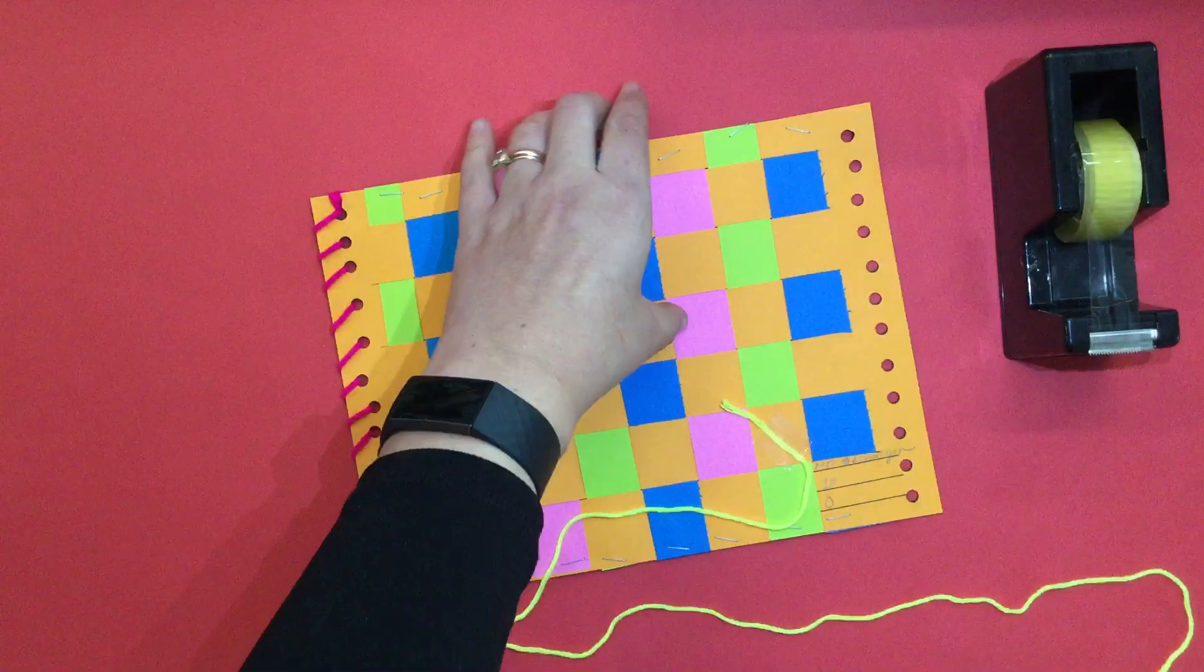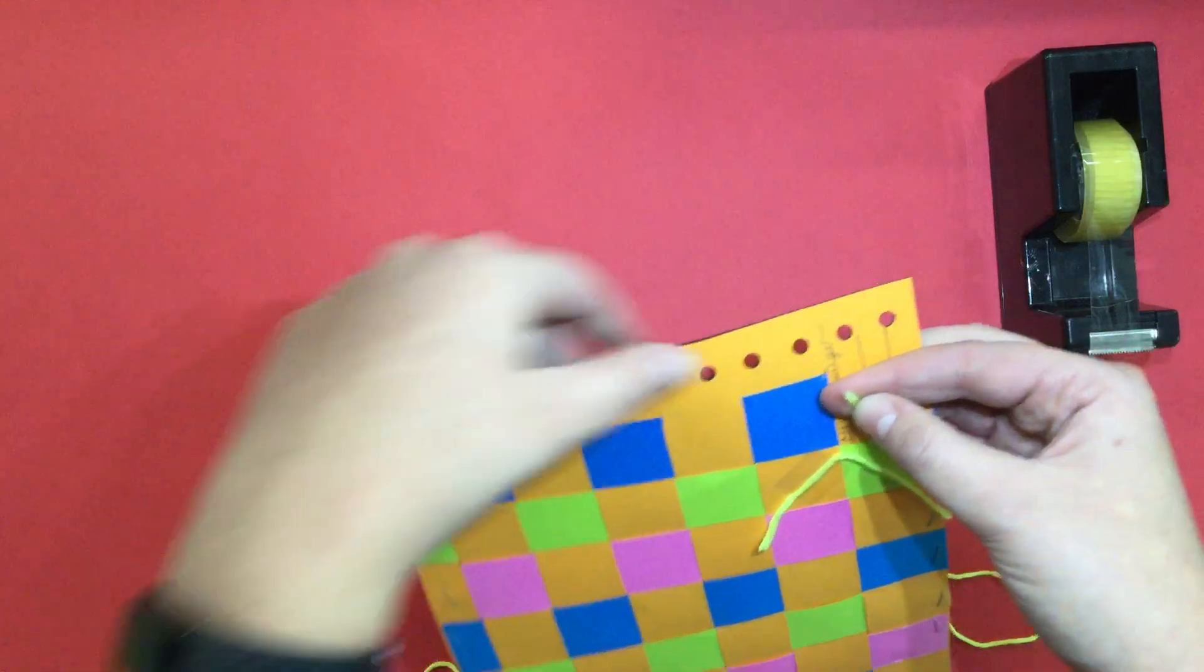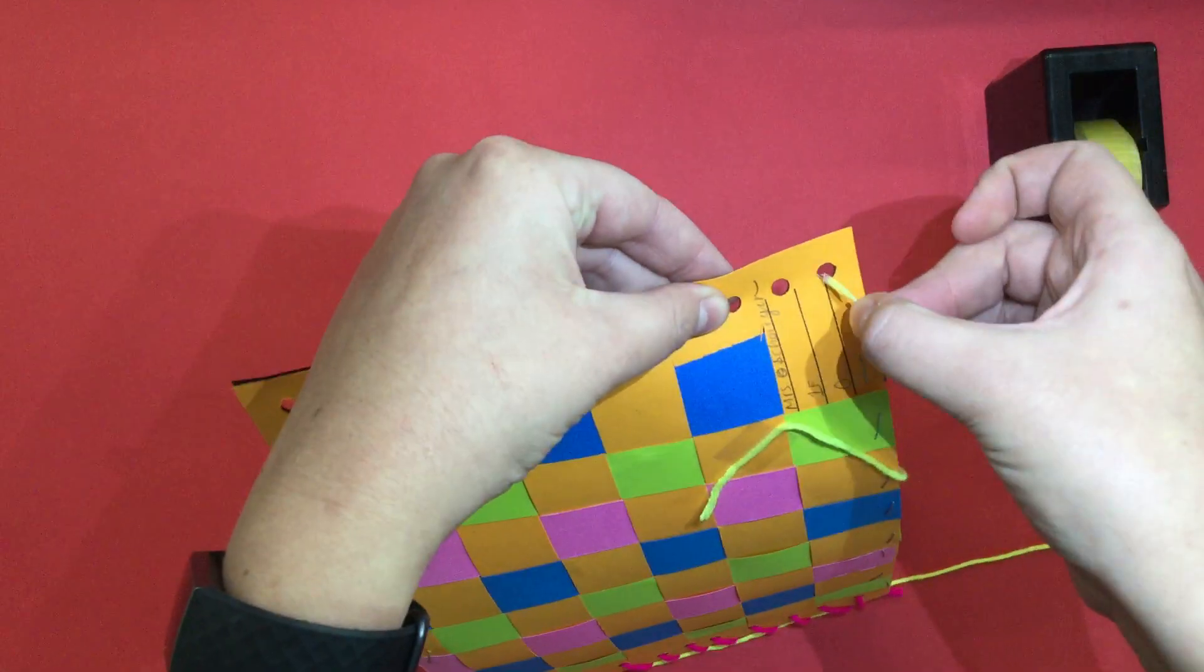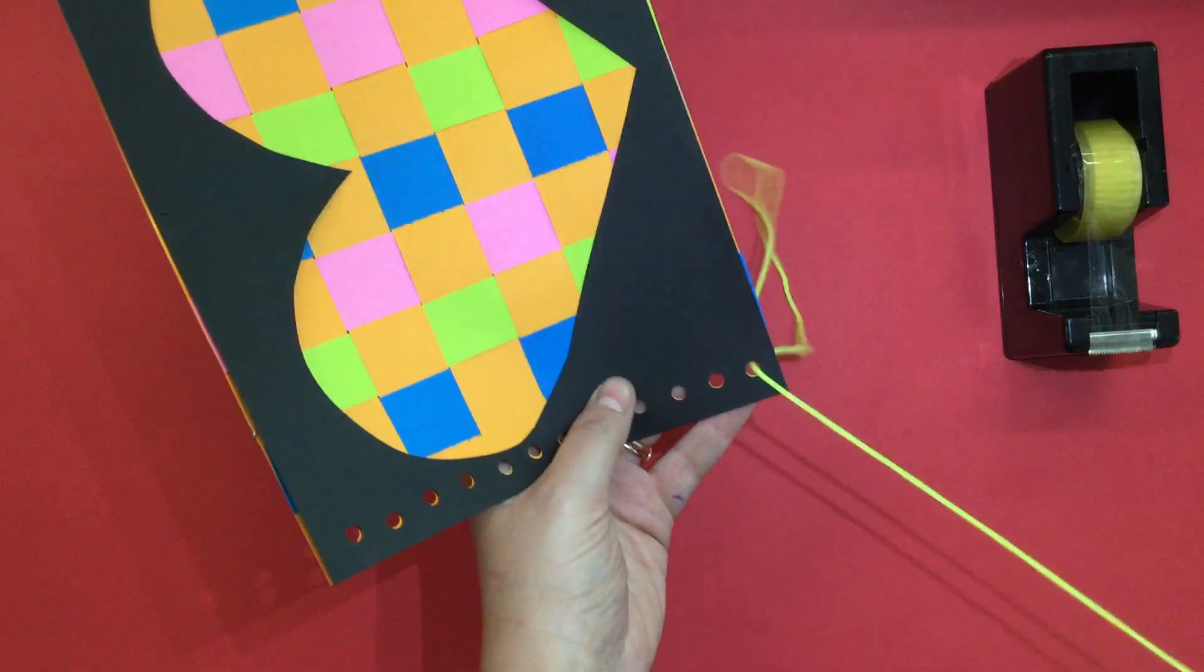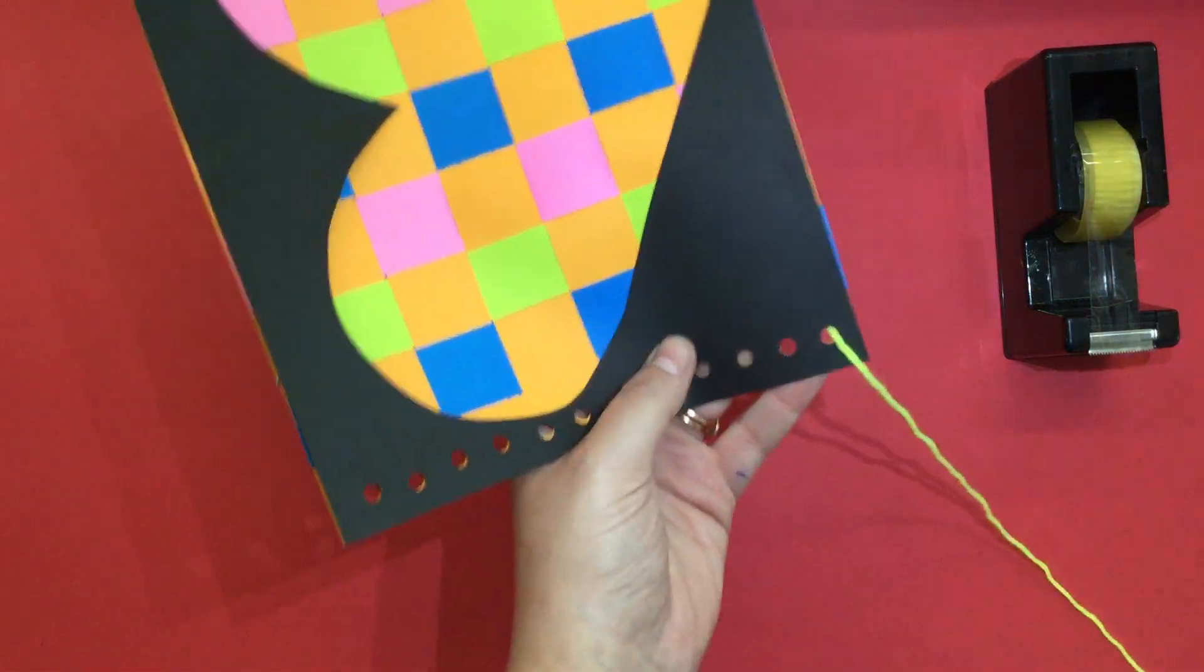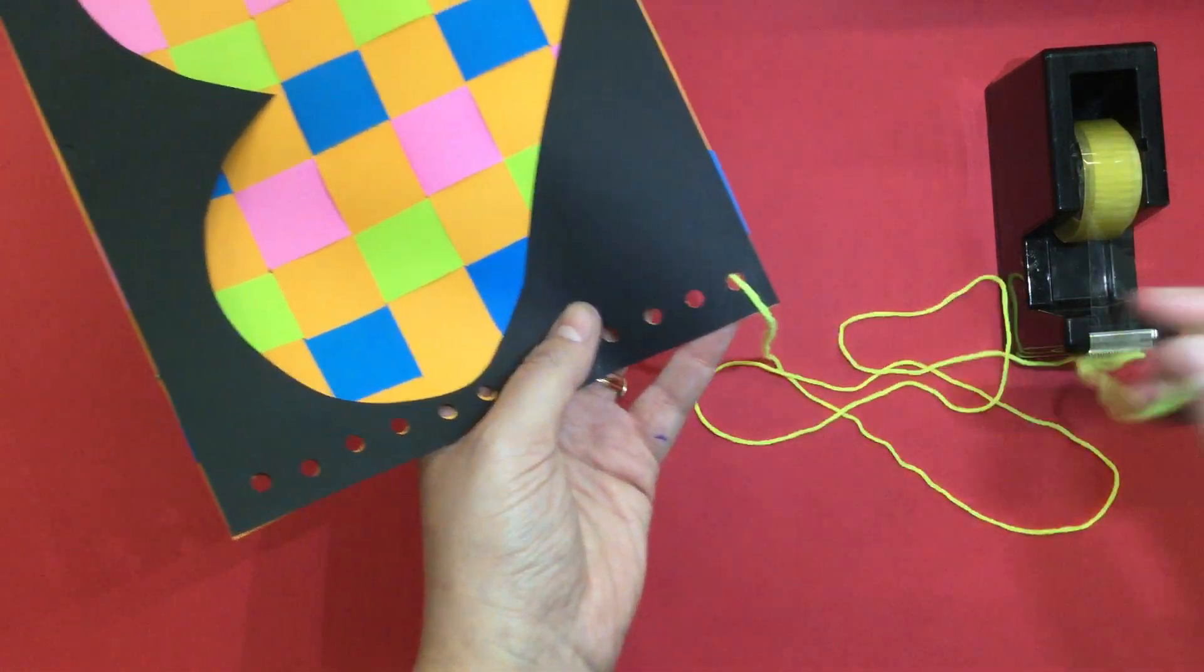Okay, now I'm ready to do my stitching. What I'm going to do is take my cap of my string and I'm going to poke it in the bottom of my hole, pulling all the way through until all of my string is out.